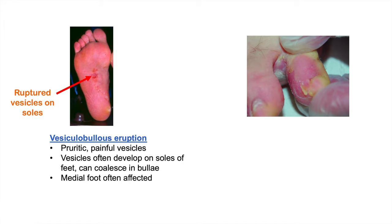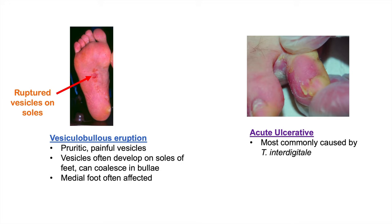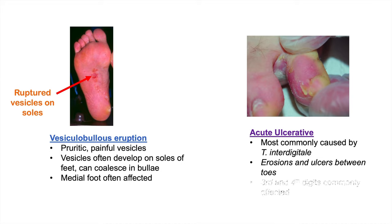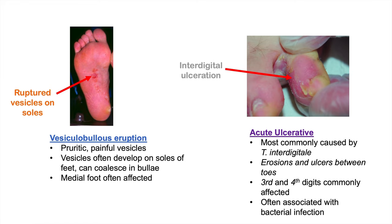The fourth clinical presentation is acute ulcerative tinea pedis, which is most commonly caused by trichophyton interdigitale, as opposed to the other types which are most commonly caused by trichophyton rubrum. We see erosions and ulcers in between the toes, with the third and fourth toes being the most commonly affected. Associated bacterial infections are also often seen with this condition.